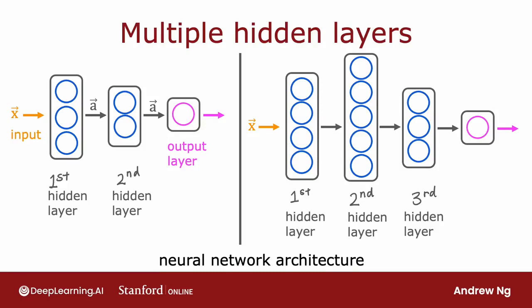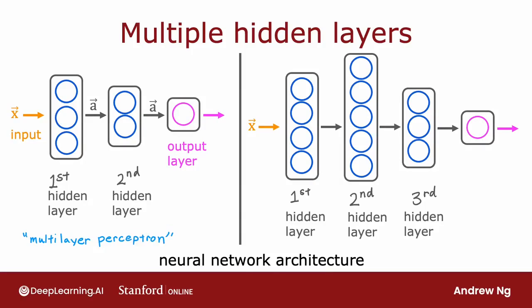By the way, in some of the literature you'll see this type of neural network with multiple layers called a multi-layer perceptron. So if you see that, it just refers to a neural network like what you're seeing here. So that's a neural network. You now know how a neural network works. In the next video, let's take a look at how these ideas can be applied to other applications as well — in particular, the computer vision application of face recognition.